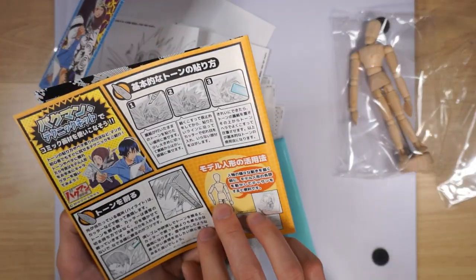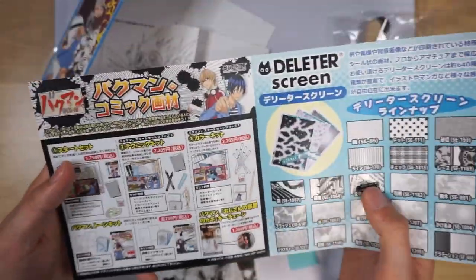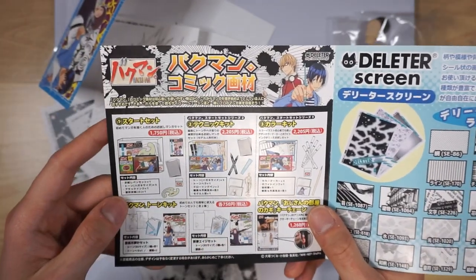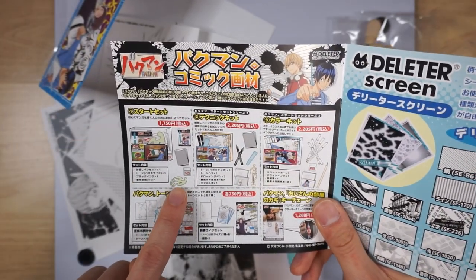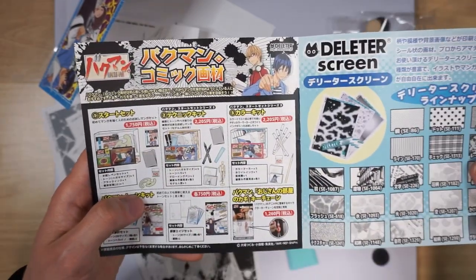But you also get an instruction manual. So you can actually learn how to use the tools that are included in here. First, there's some advertising for the other sets that you can buy. You got one of these windy rulers and a G pen holder. This is the set that we've actually purchased today.